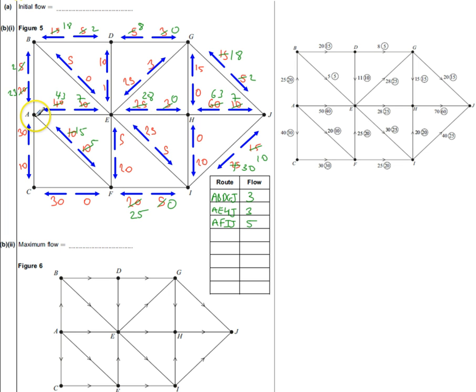The next one will go A, F, I, J, so that has a maximum increase of 5. That means I can reduce all of these by 5, so all the potential increases go down by 5 and my potential decreases go up by 5.